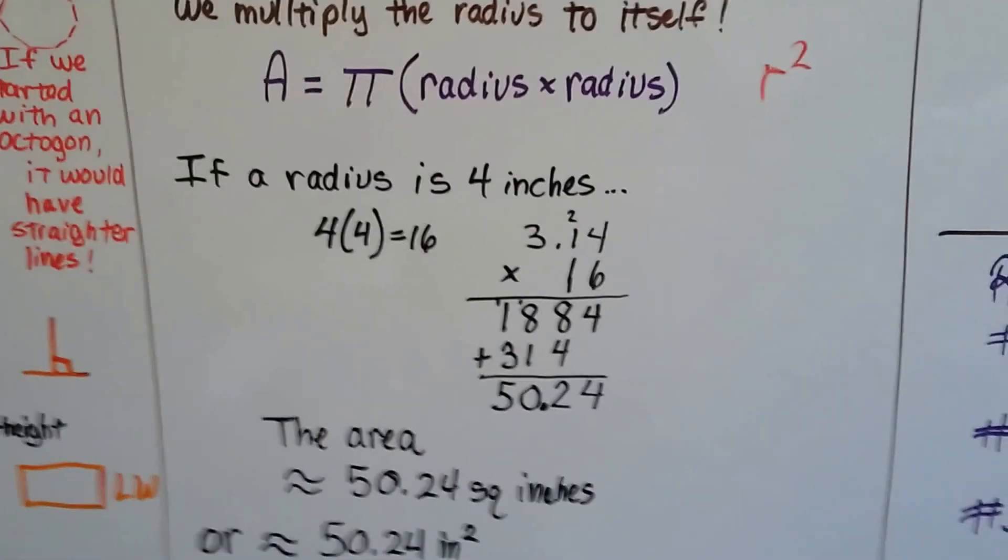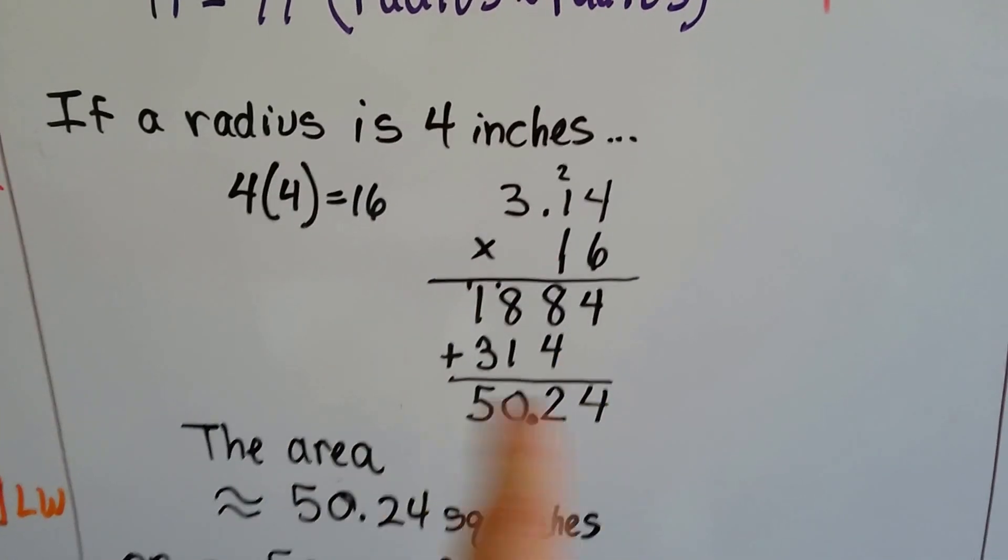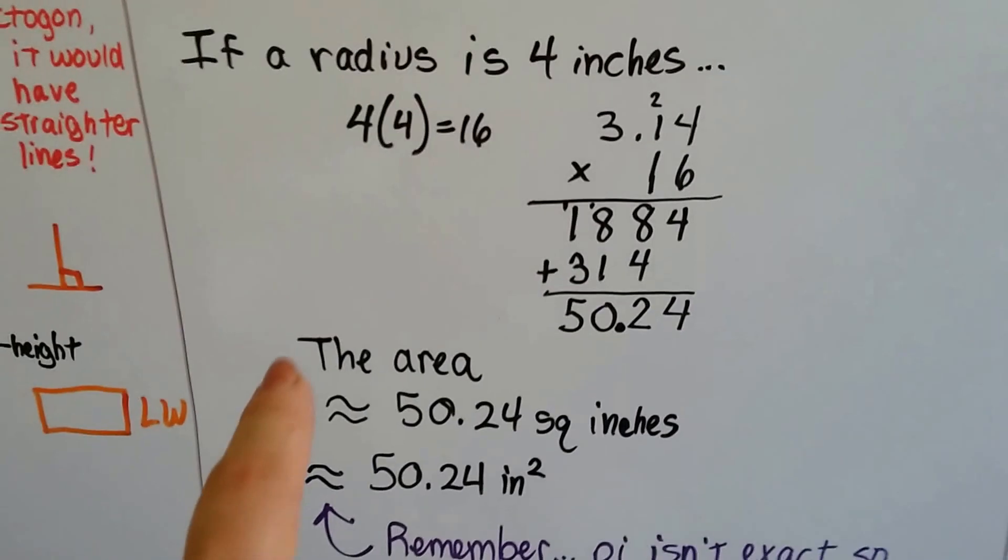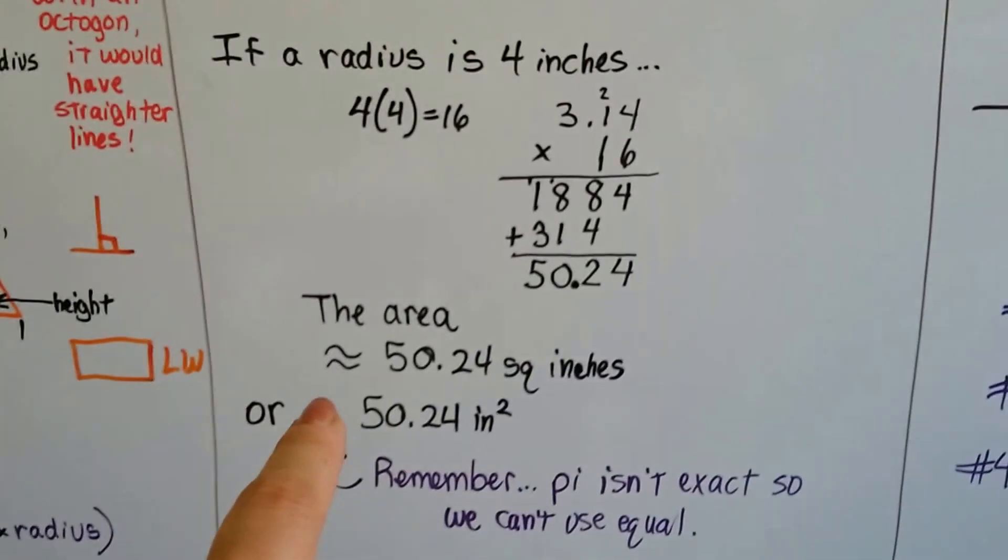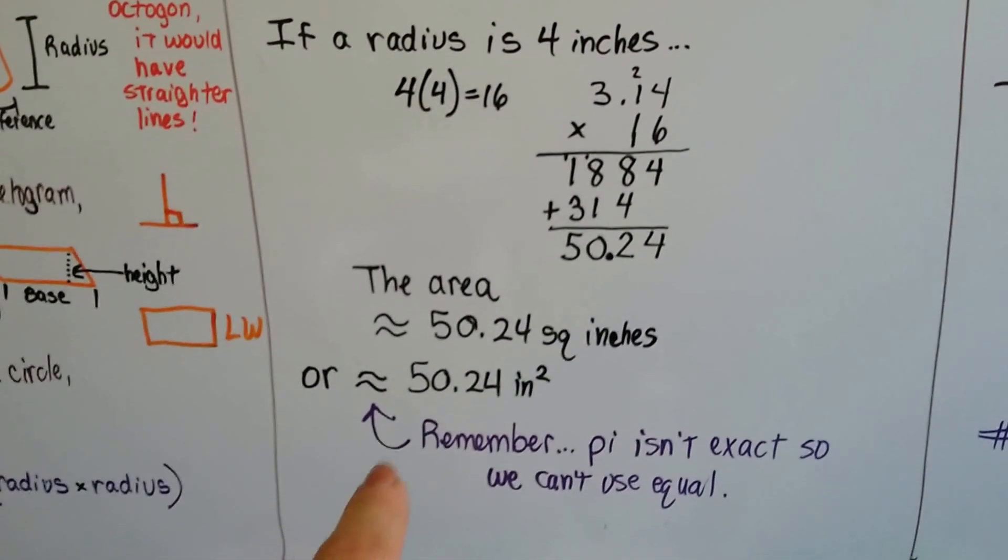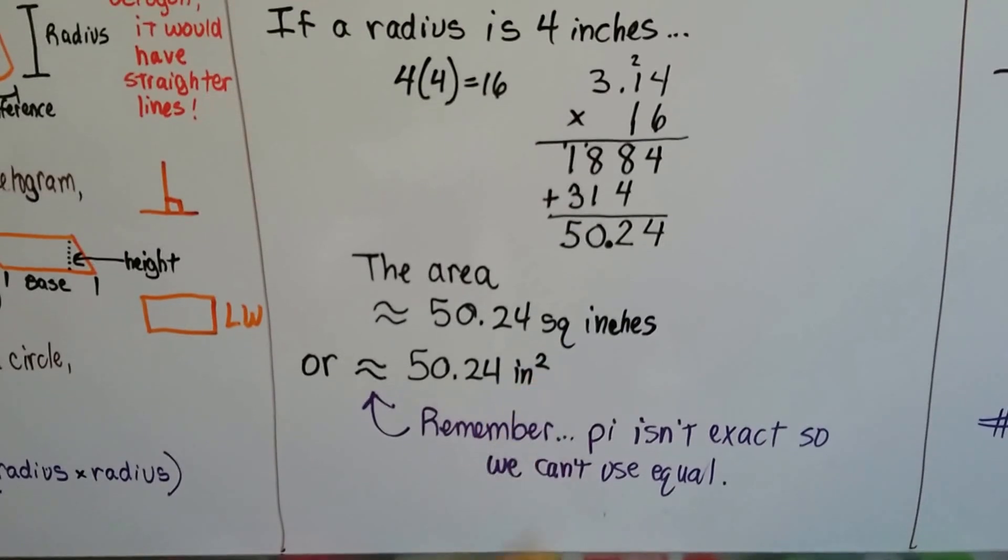Now we multiply it to pi, 3.14. We do our multiplication and our addition and we come up with 50.24. So if it had a 4 inch radius, the area would be approximately 50.24 square inches or 50.24 inches squared.